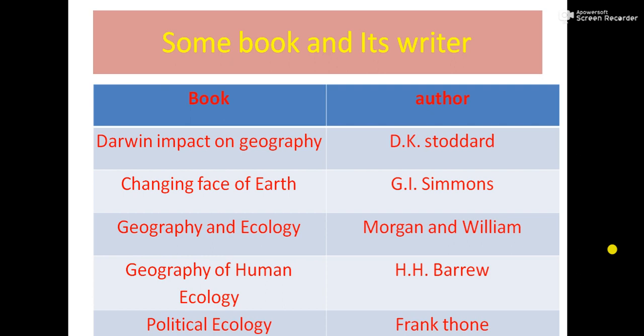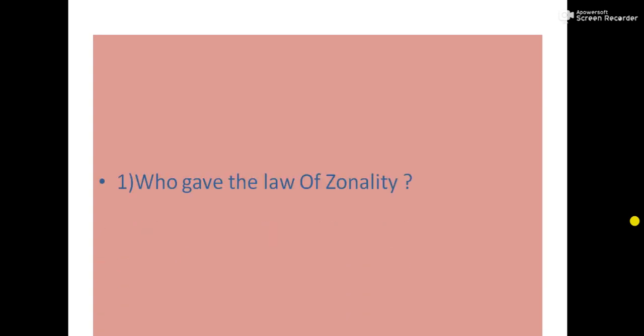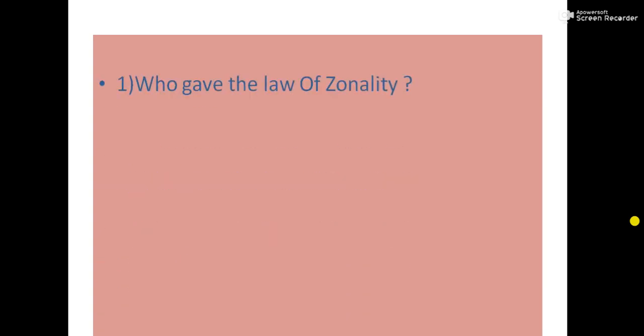Next book name is Geography of Human Ecology and the writer H.H. Barrow. And the next book Political Ecology, this book was written by Frank Thorne.